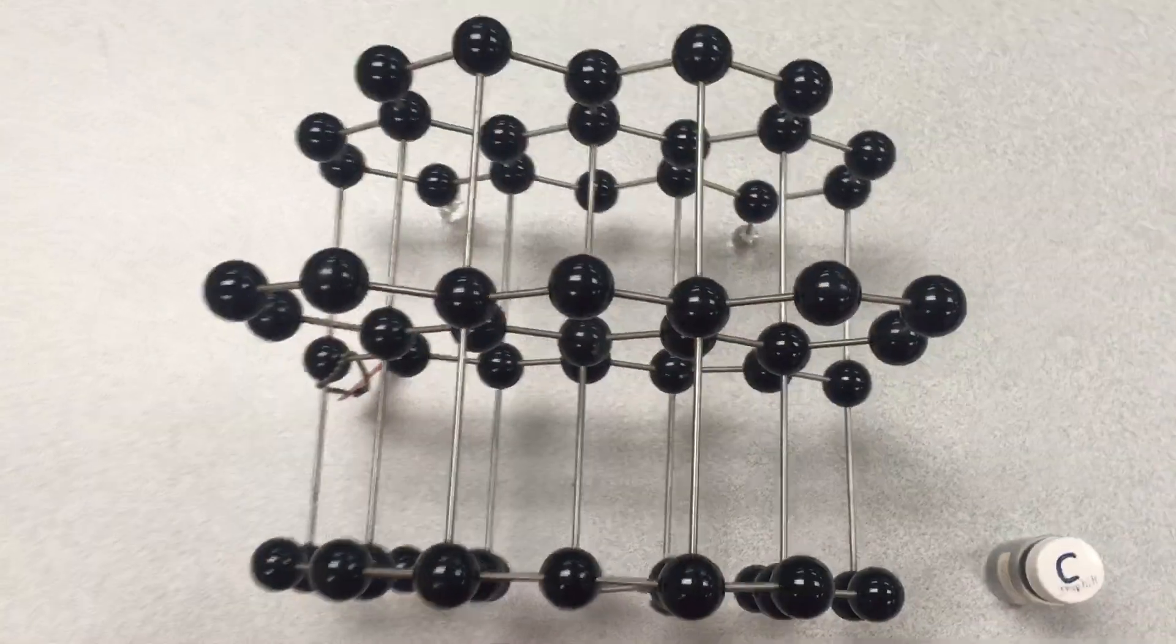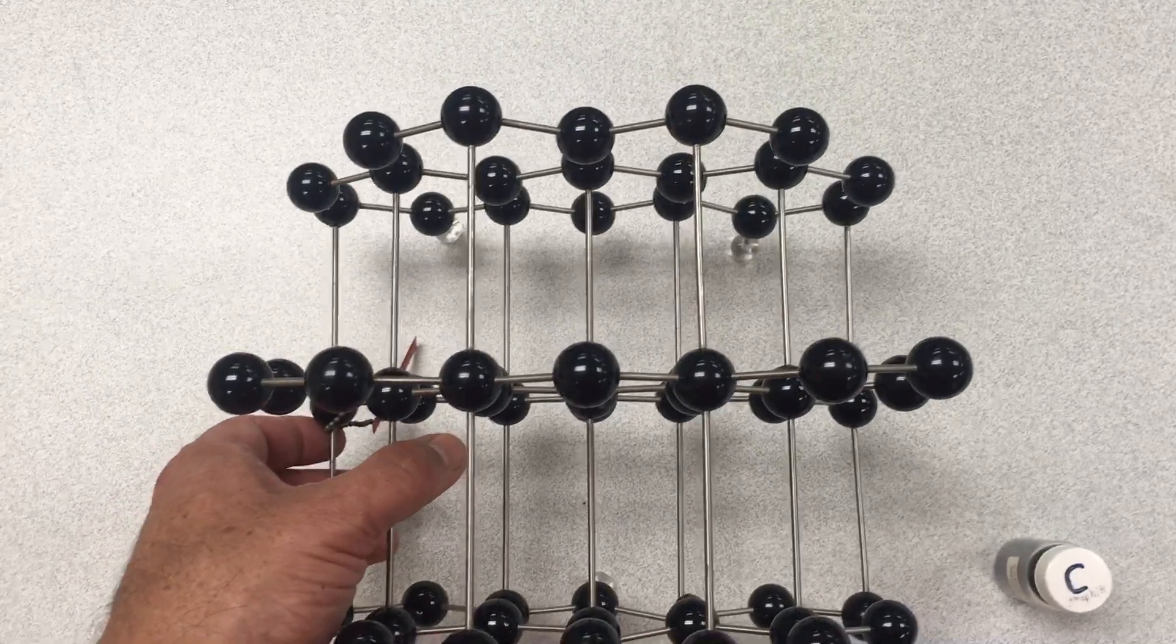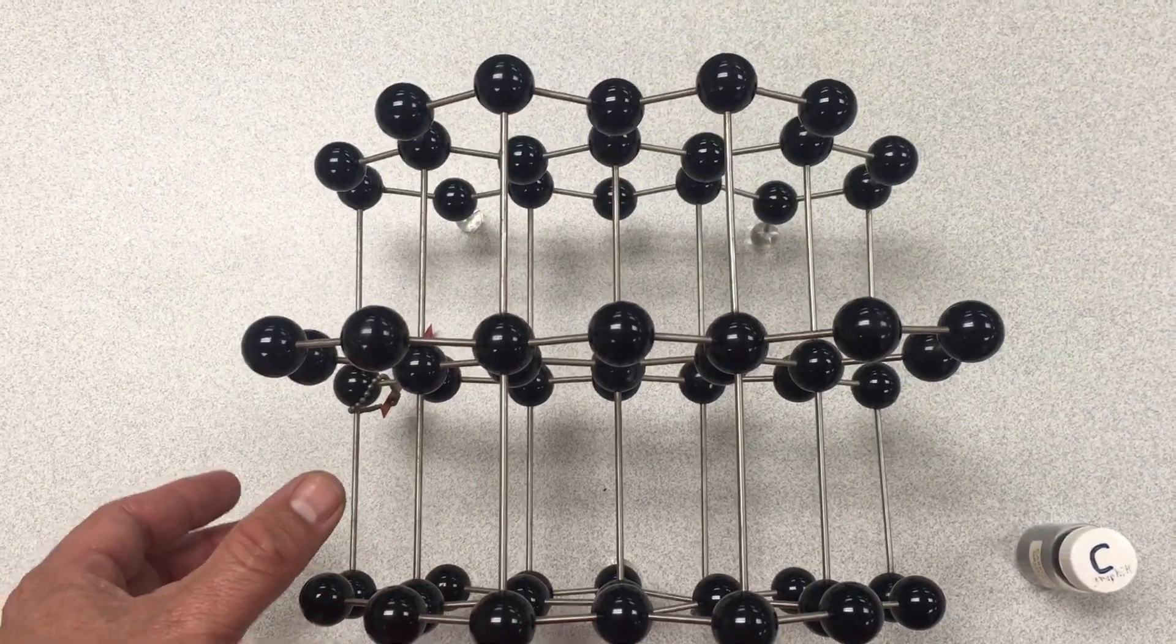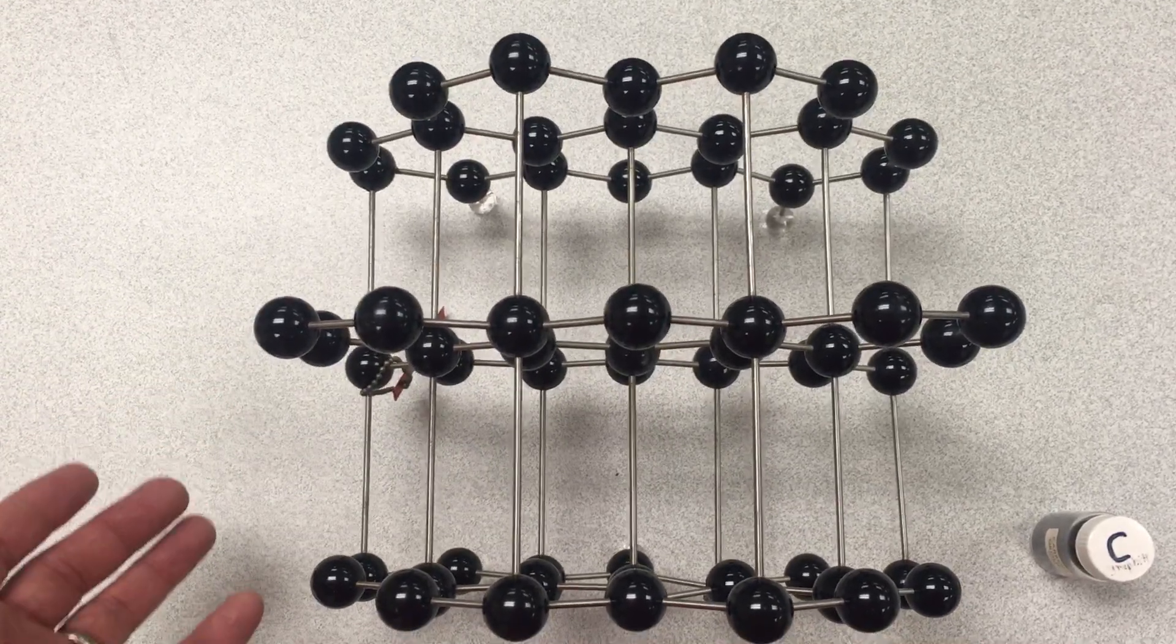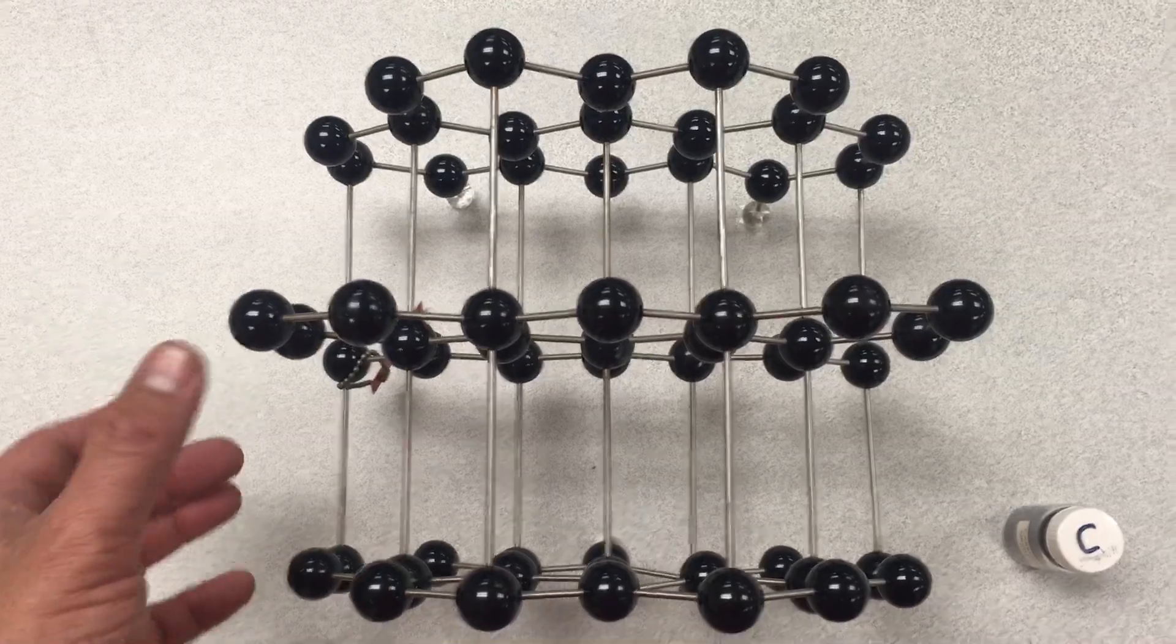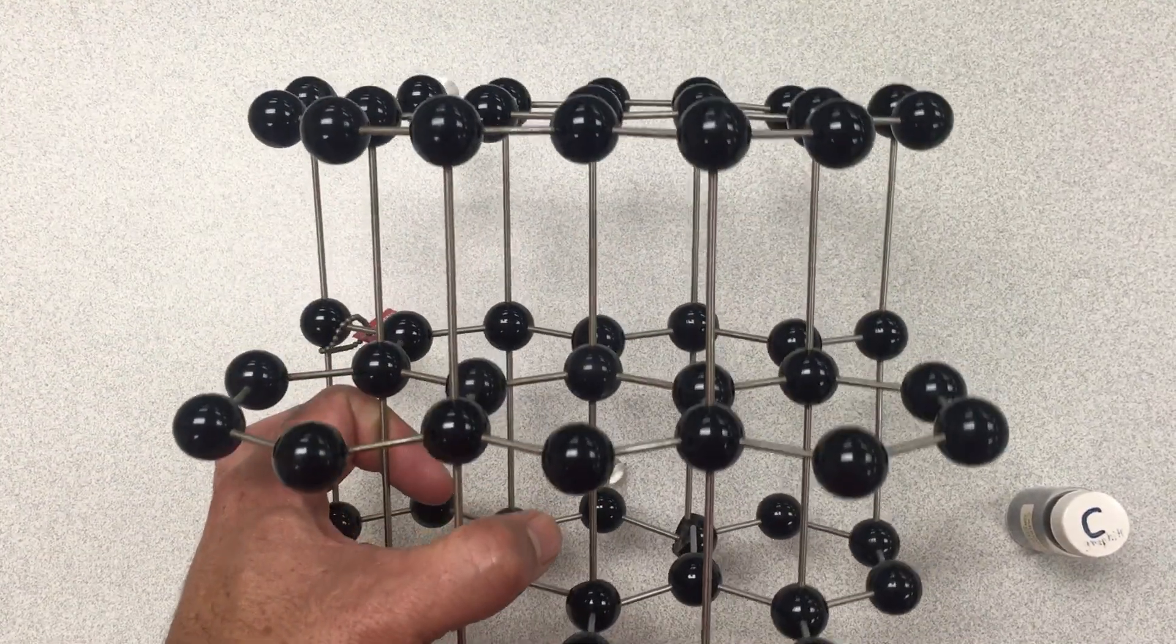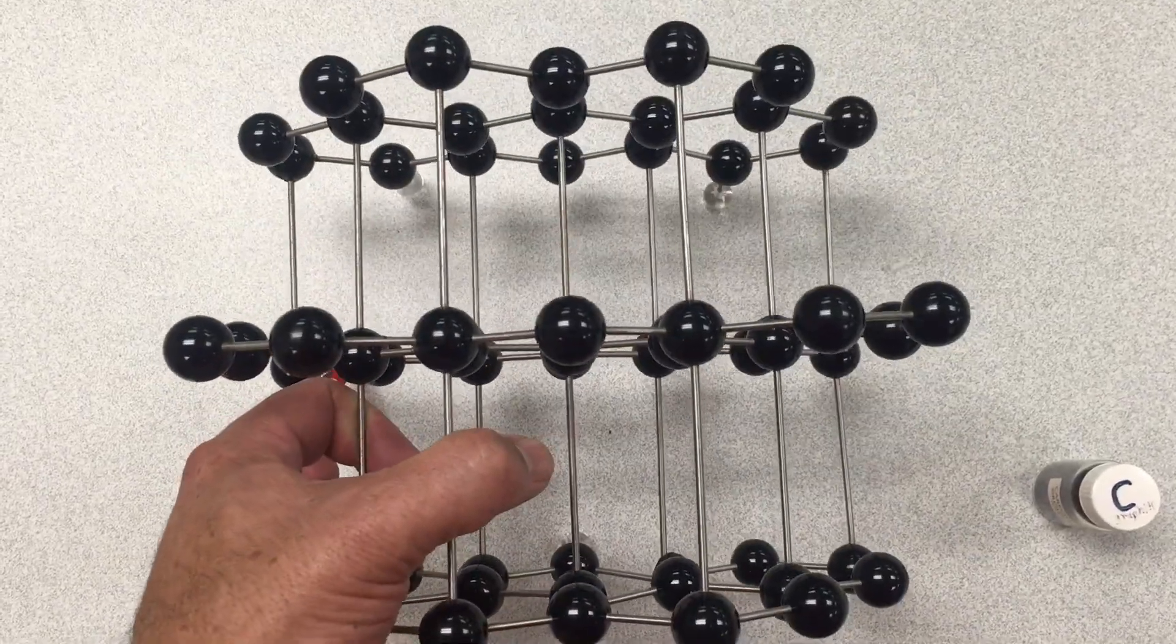And I'll move on to a model of another form of carbon. And this is carbon in its graphite form. And you can see that instead of being that sort of three-dimensional structure where bonds seem to be going everywhere, you can see that here carbon is arranged in layers. And three layers are shown here.